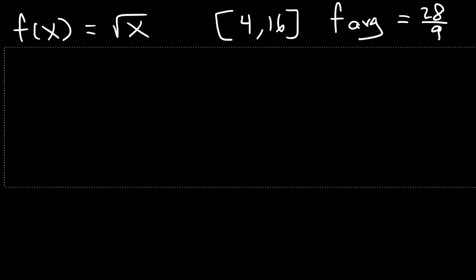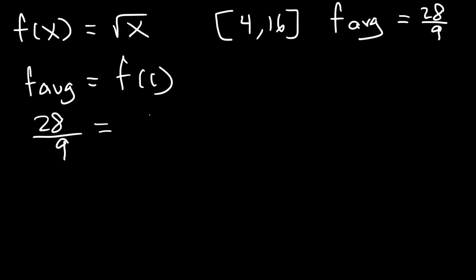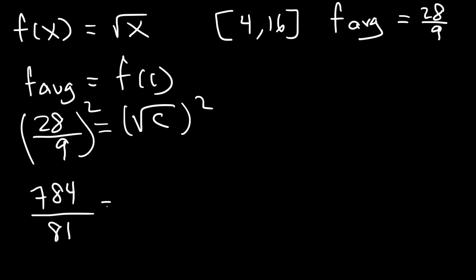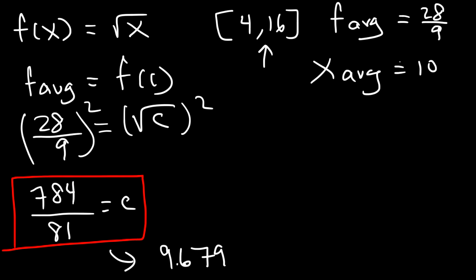Now let's find the c value. Setting the average value 28 over 9 equal to f of c, which is the square root of c, and squaring both sides: 28 squared is 784, and 9 squared is 81, so c equals 784 over 81. The midpoint of 4 and 16 is 10. As a decimal, 784 divided by 81 is approximately 9.679. So c is less than the average x value of 10.